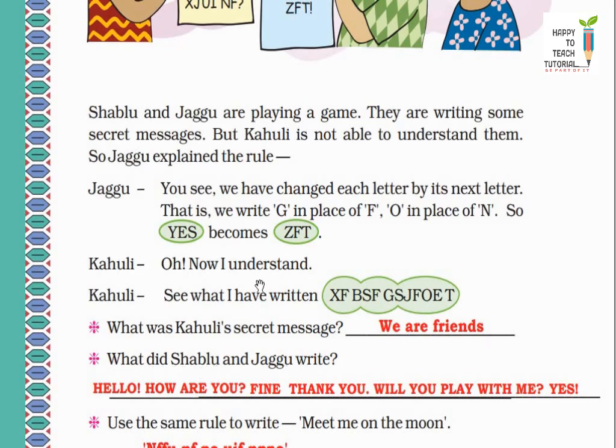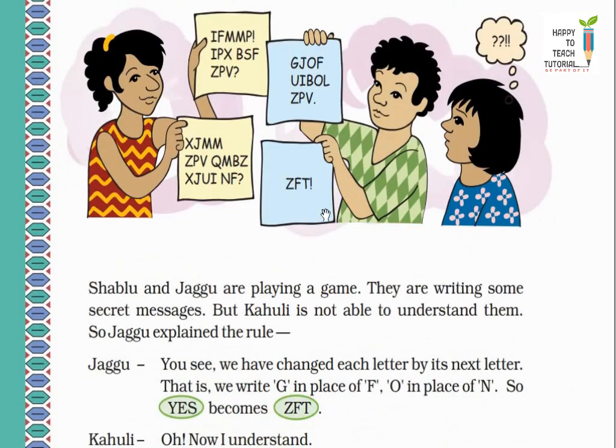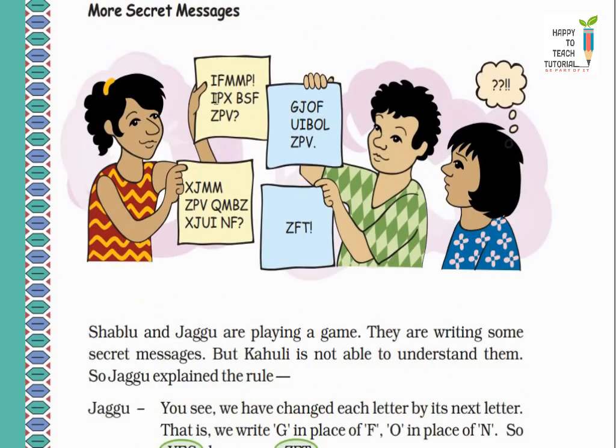Next: What did Shablu and Jaggu write? Look, Shablu and Jaggu have written here. These people changed every letter with its next letter. So what comes before I? H. Before F is E. Before M? L. Again before M is L. And before P is O. So what comes here? Hello. Now look here. In place of I what comes? H. In place of P, O. In place of X, W. So what comes here? How. In place of B, A comes. In place of S, R comes. And in place of F, E comes. So 'How are.' And in place of Z, Y comes. In place of P, O comes. And in place of V, U comes. So the complete message is 'Hello, how are you?'